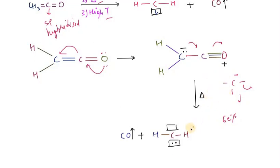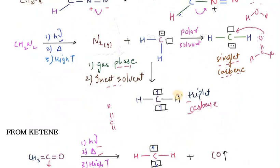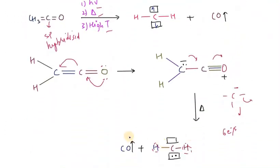In the case of ketene-derived carbene, there is no chlorine present (unlike the first method), so there is no clear backbonding or lone-pair donation. In this condition, which type of carbene forms depends entirely on the solvent condition: whatever the solvent condition, that type of carbene — singlet or triplet — will form.